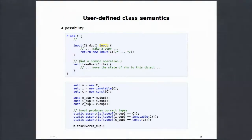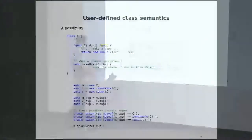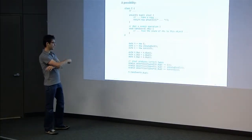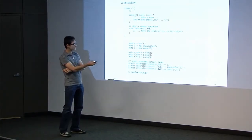As promised, here's how inout works. If you make a member function inout and specify inout throughout its implementation including on the return, that inout becomes either mutable, const, or immutable depending on what you call it with. So with mutable, immutable, and const objects calling dup, the static asserts all pass — the copies all carry the correct type qualifier of the original.